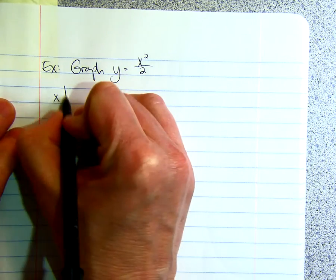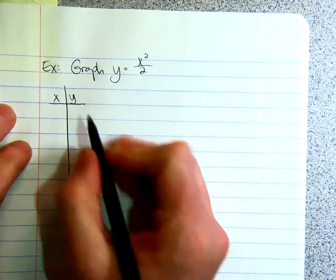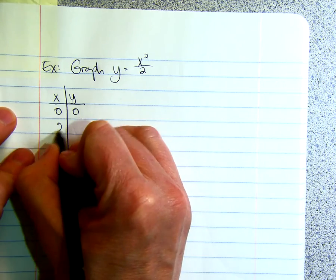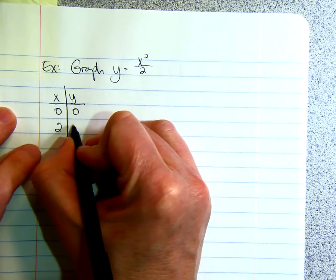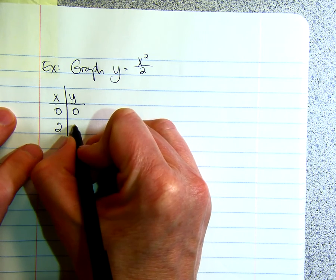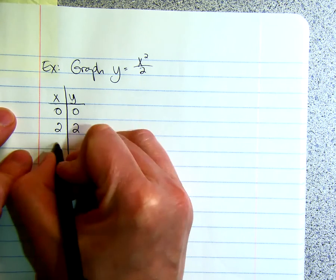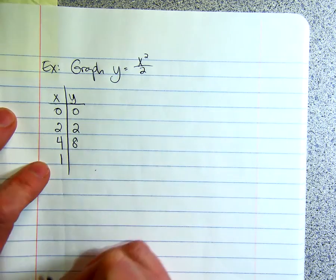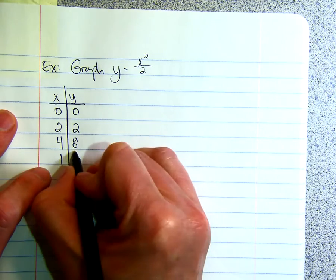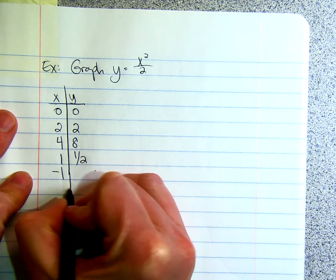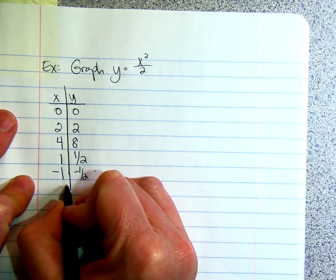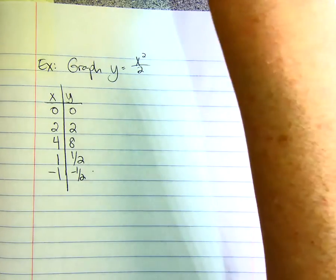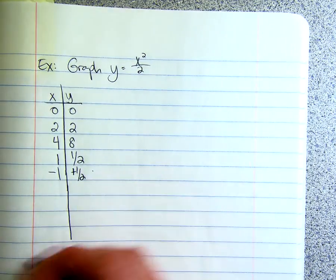So we'll do x and y. 0 divided by 2 is just 0. 2 squared is 4 divided by 2, which is 2. When x is 4, we square to get 16, divided by 2 is 8. 1 squared is 1 divided by 2, which is 1 half. How about negative 1? When you square negative 1, you get positive 1, divided by 2 is 1 half, so it should be positive 1 half.